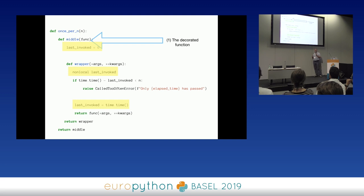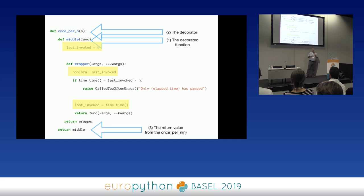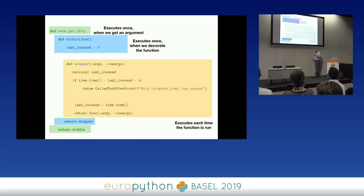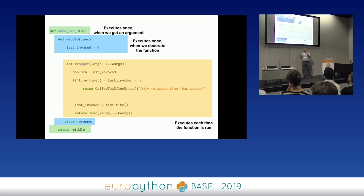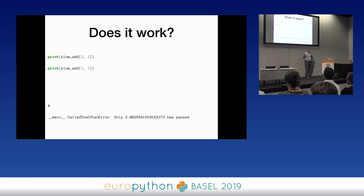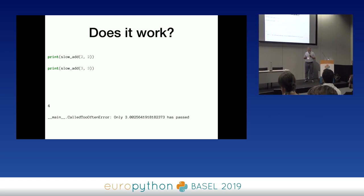When I say slow_add(2, 2) I get four, and slow_add(3, 3) — it's working great. We can actually pull this off.